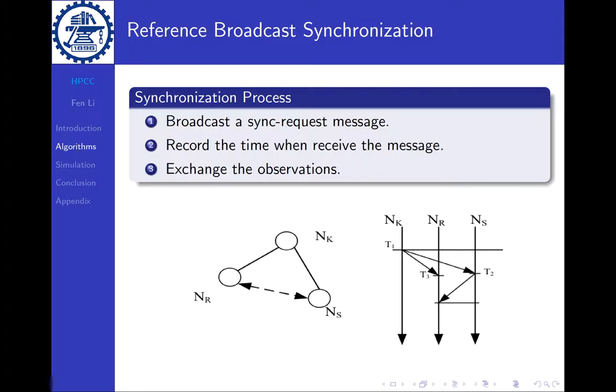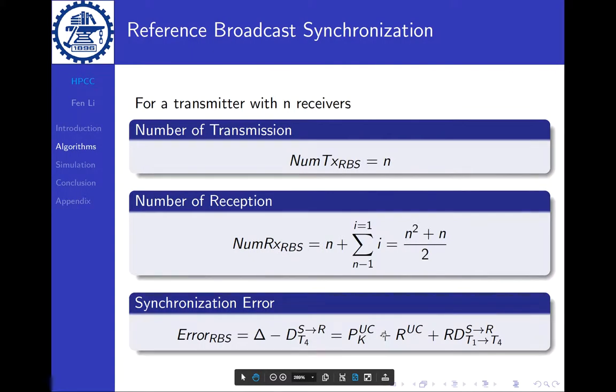Then NS and NR record the time when the message arrives according to their local time. In the right figure, it is T2 and T3 respectively. Finally, NR and NS will exchange the observations between each other and estimate the clock drift between the two by the observations. It is pretty straightforward.